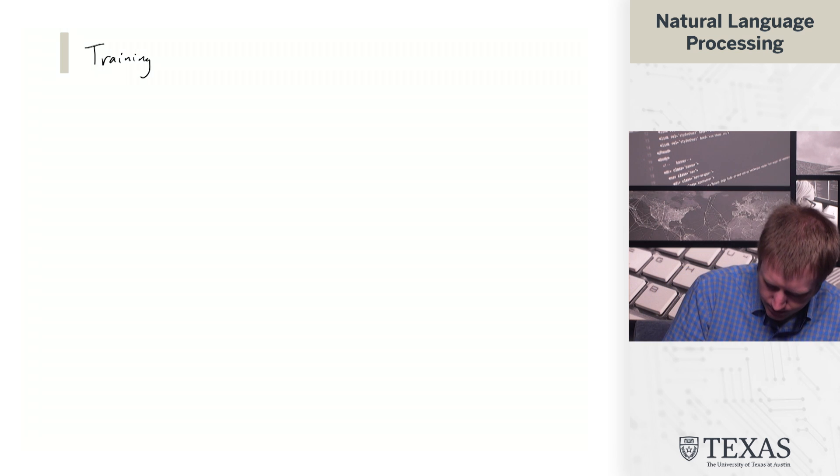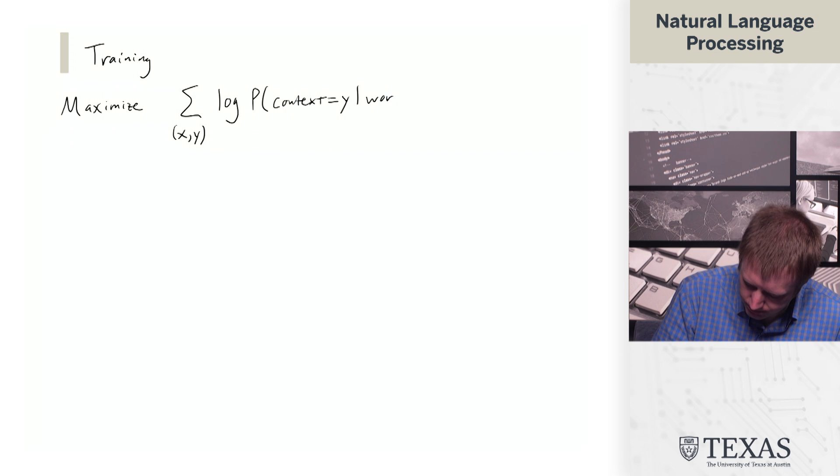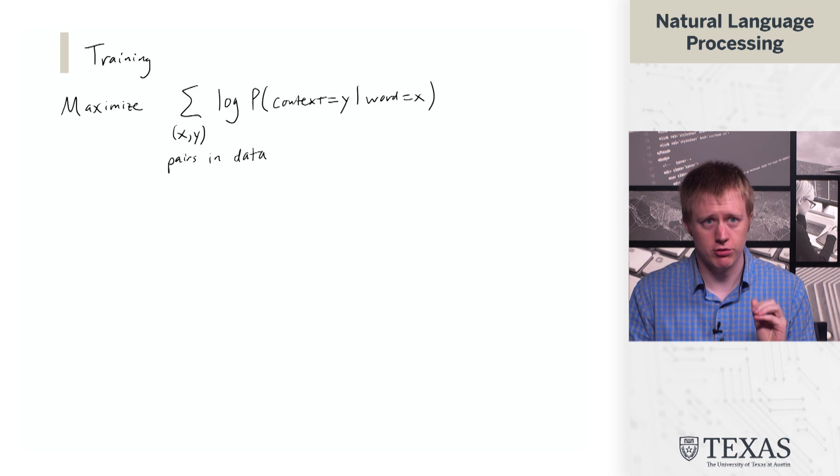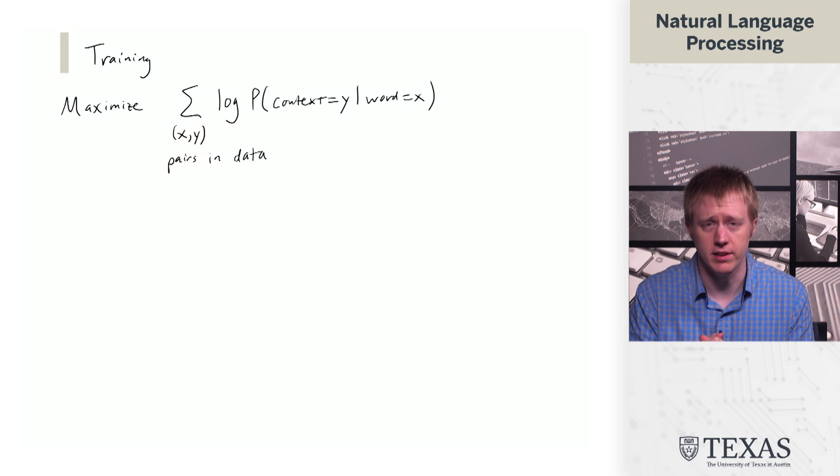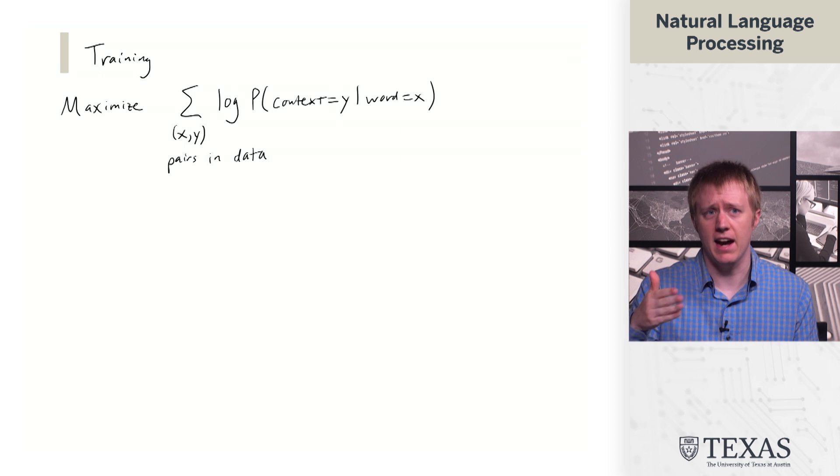So now we're going to talk about training this. And training it is also going to follow a similar kind of schema as we've seen before. So remember that based on our window size k, we extract a certain number of word and context pairs like we saw in the example. And what we're going to do in training is we are going to maximize the sum over these pairs of the log probability of that context given that word.